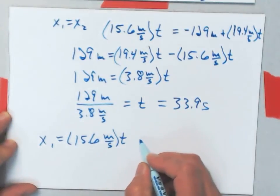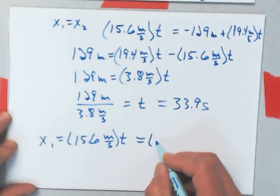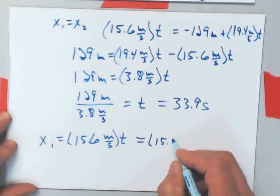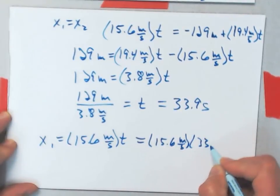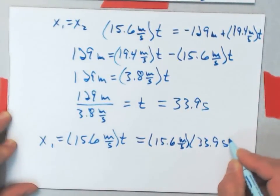So, at that time, the distance will be 15.6 meters per second times 33.9 seconds.